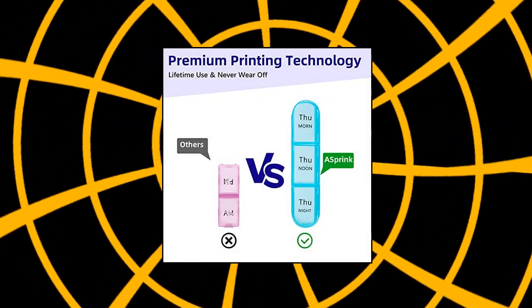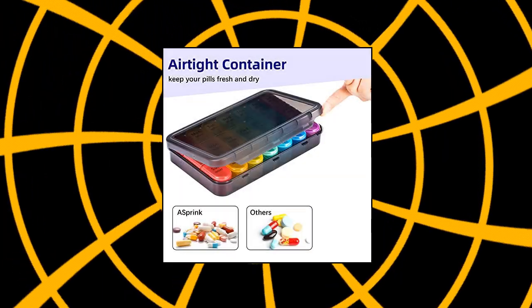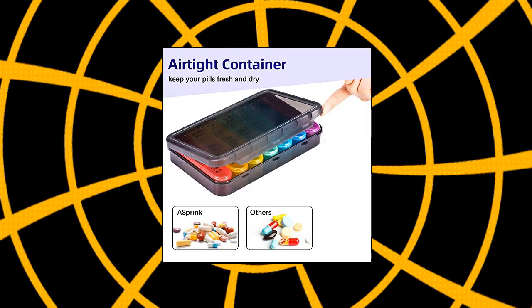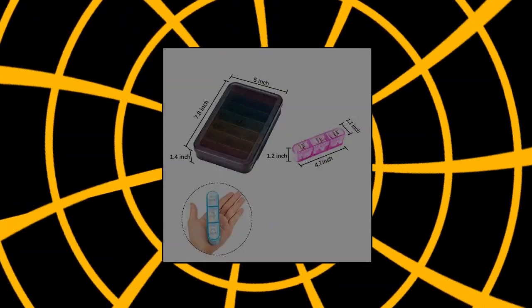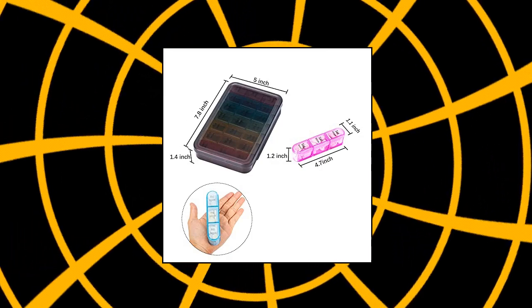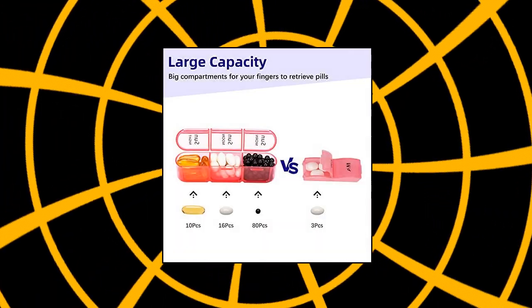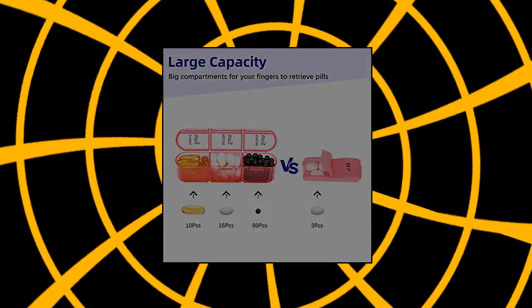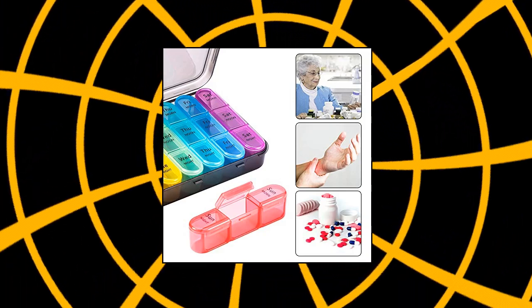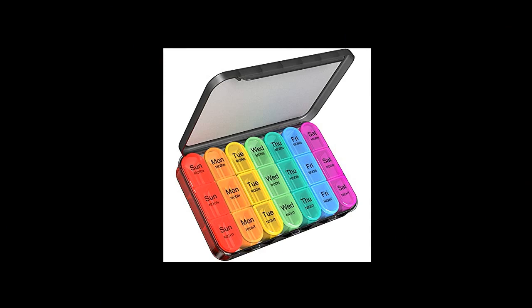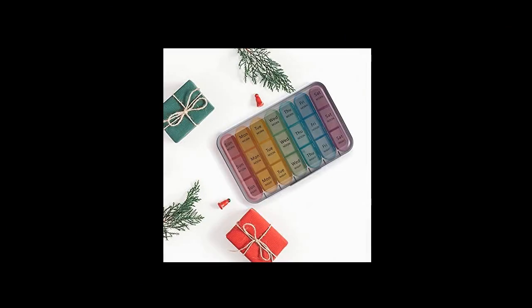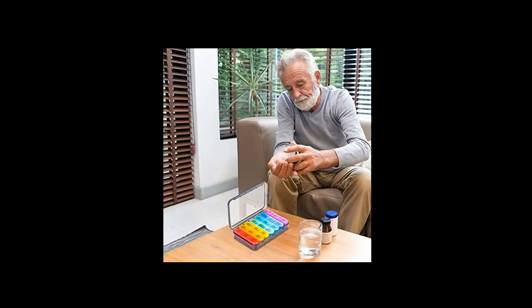A Sprink pill box three times a day weekly organizer, large capacity rainbow pill box. The weekly pill box organizer has 7 separate daily pills organizer for a week, total 21 large compartments. Each slot can store 10 fish oils and at least 80 small tablets. Plenty of room for all of your meds and keeping yourself organized. Excellent printing. Each day of the week has compartments for morning, noon, night on its top.